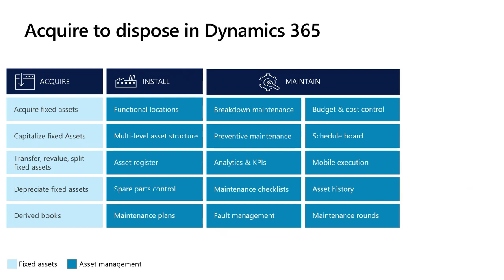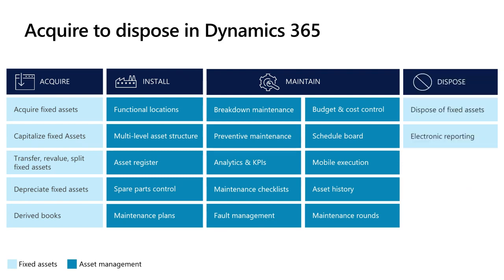All of the information that we track on our assets is then used in our analytics and KPIs. Finally, once the asset is no longer able to be used, we dispose of the asset. In asset management, this entails updating the lifecycle state to retire it, and then we use the fixed asset module to track the financial disposal and reporting on that asset.